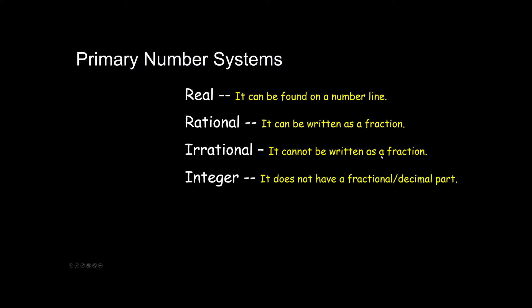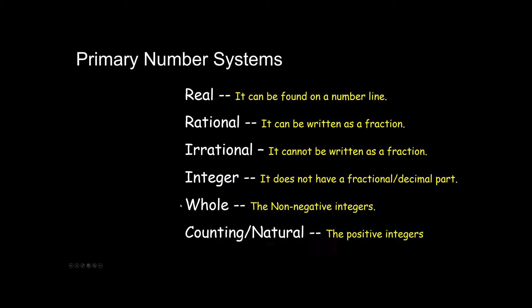If we can determine that something is rational, we then go on to determine whether it is an integer or not — meaning it does not have a fractional or decimal part. If it is an integer, it is either a whole number or the opposite of a whole number. Whole numbers are just the non-negative integers, and the counting or natural numbers are the positive integers like 1, 2, 3, 4, 5, 6, 7, 8, 9, 10. The whole numbers were the same as the counting numbers — they just also included 0, which changed how they work slightly. I then gave you two models representing the relationship between these systems.